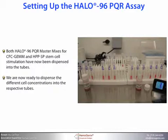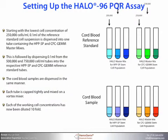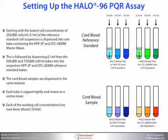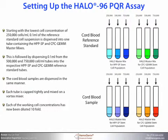Both HALO 96PQR master mixes for CFC-GEMM and HPP-SP stem cell stimulation have now been dispensed into the tubes. We're now ready to dispense the different cell concentrations into the respective tubes. Starting with the lowest cell concentration of 250,000 cells per milliliter, 0.1 milliliters of the reference standard cell suspension is dispensed into one tube containing the HPP-SP and CFC-GEMM master mixes. This is followed by dispensing 0.1 milliliters from the 500,000 and 750,000 cells per milliliter tubes into the respective HPP-SP and CFC-GEMM reference standard tubes. The cord blood samples are dispensed in the same manner. Each tube is capped tightly and mixed on a vortex mixer, and each of the working cell concentrations has now been diluted tenfold.